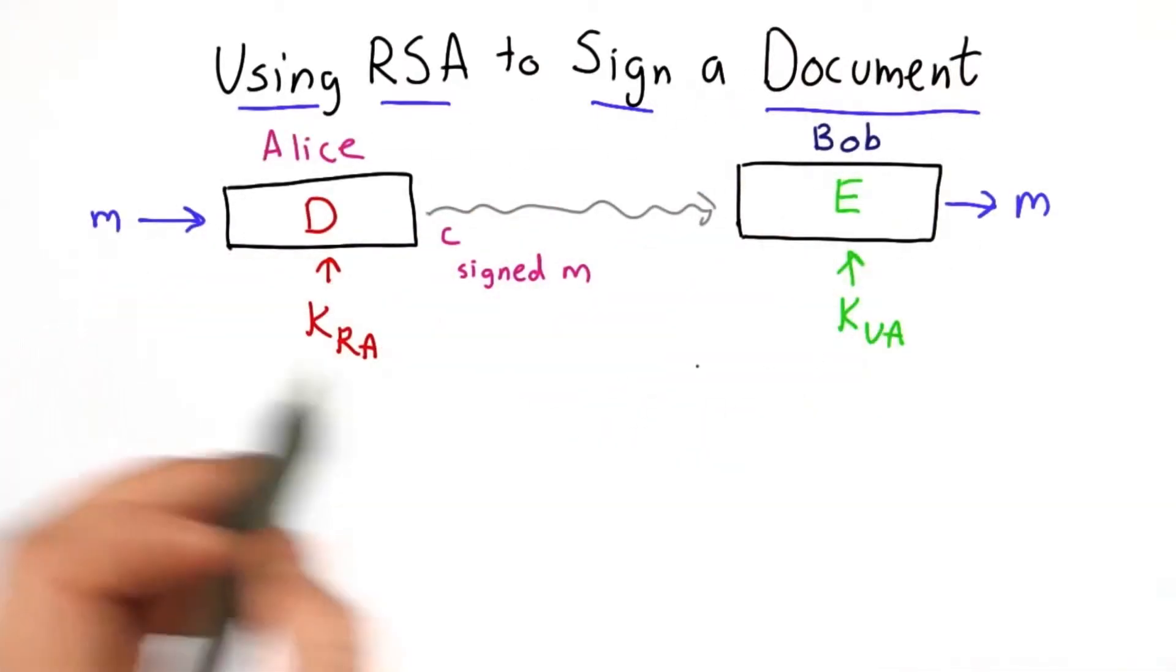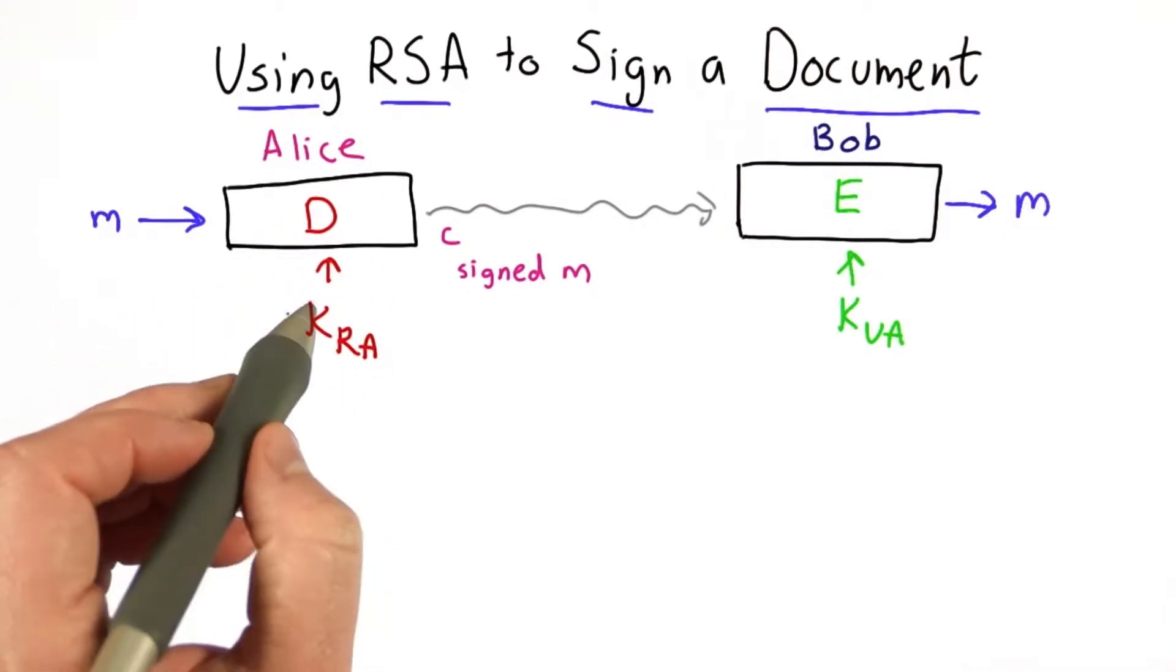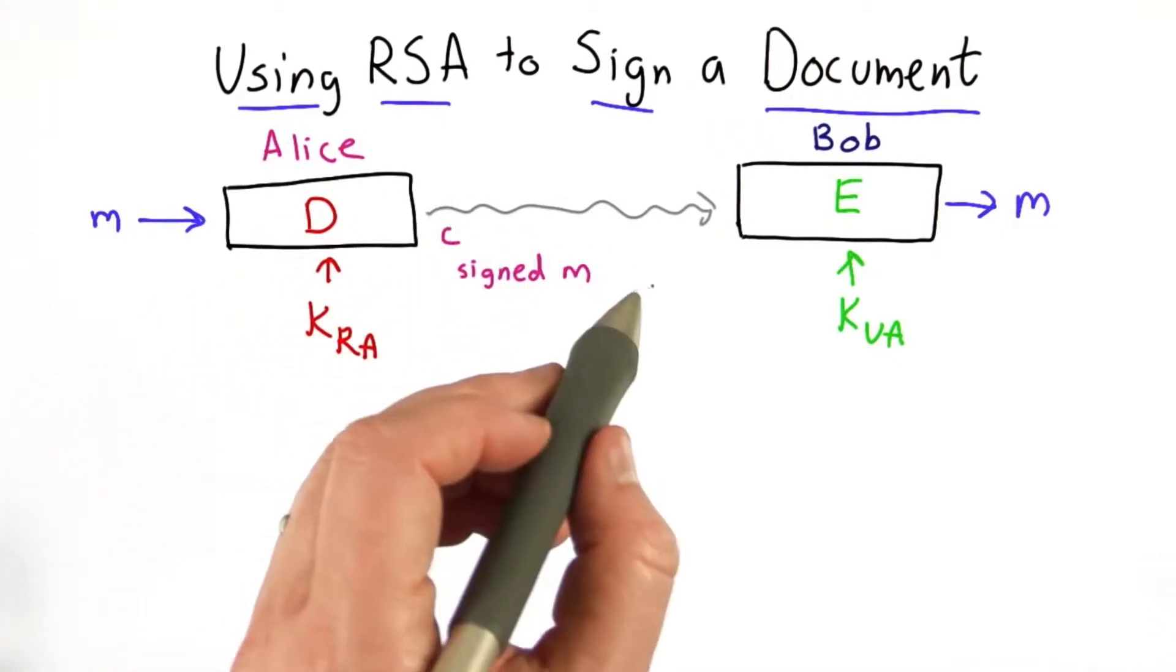This would be the straightforward way to do this. Alice would take the document and encrypt it using her private key. That produces a ciphertext, which is really the signed document.